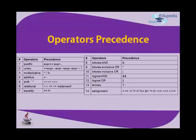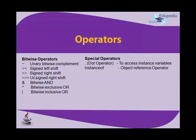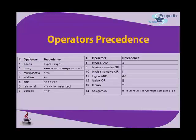Continuing with operator precedence: after additive comes shift operators — left shift (<<), right shift (>>), and unsigned right shift (>>>). Then relational operators: less than (<), greater than (>), less-than-or-equal-to (<=), greater-than-or-equal-to (>=), and instanceof. Then equality: double equals (==) and not-equals (!=). Then bitwise AND (&), bitwise exclusive OR (^), and bitwise inclusive OR (|). For user-level programs, bitwise operators are used only when specifically needed.